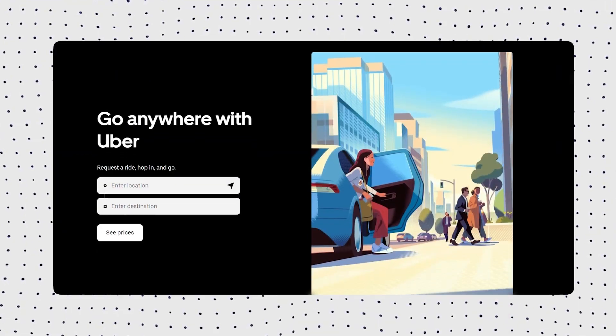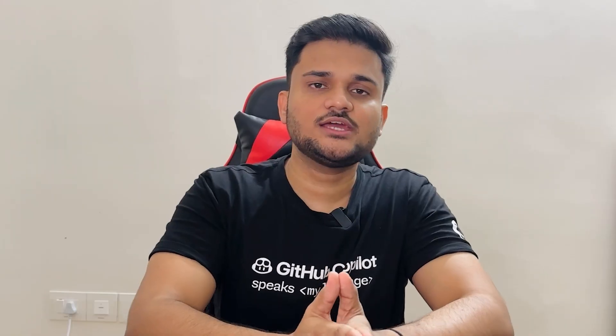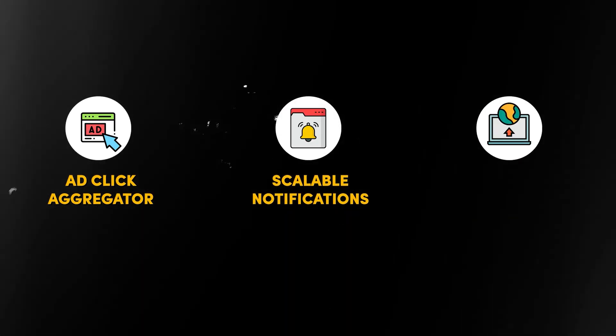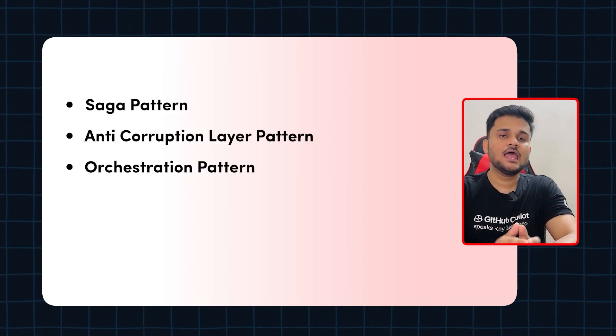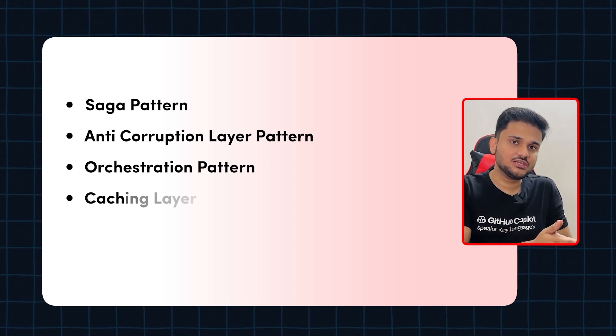We have launched our brand new system design course, which includes both the low-level design and high-level design aspects of scalable systems. With respect to HLD, we are going to talk about systems like Uber, streaming systems like Netflix, how to design your own ad click aggregator, scalable notifications, code deployment systems, and many more. There are tons of high-level design problems added, plus interesting concepts like the Saga pattern, anti-corruption layer pattern, orchestration pattern, caching layers, blob storage, and more.